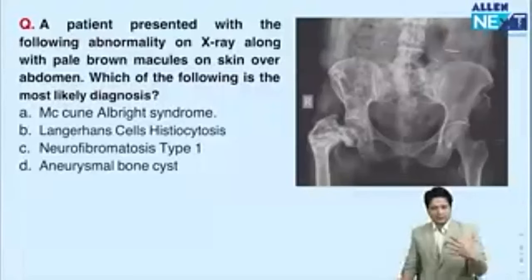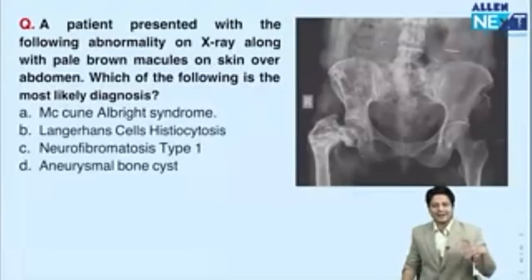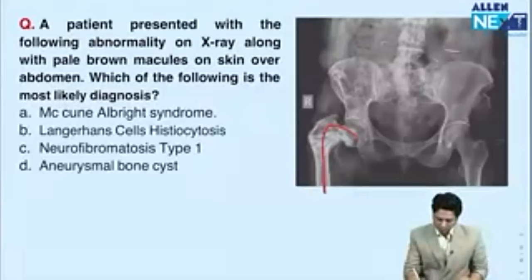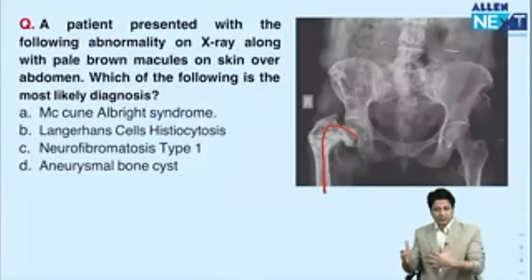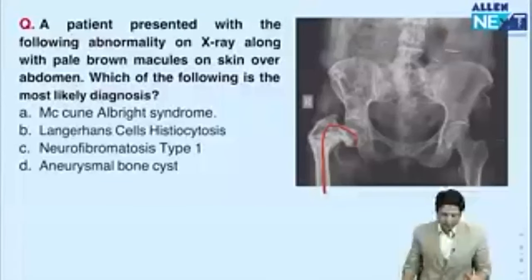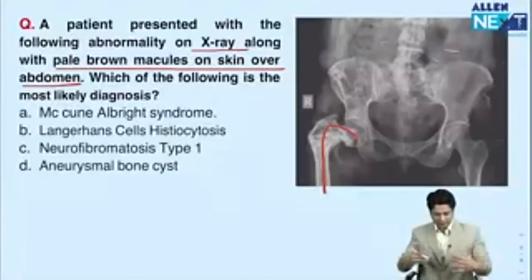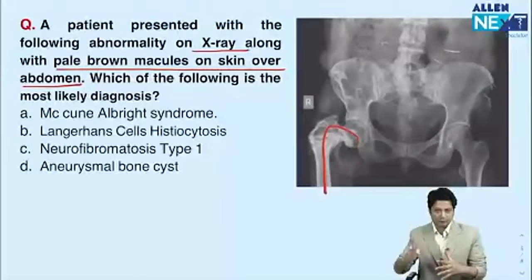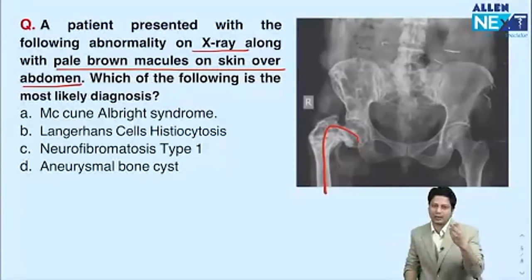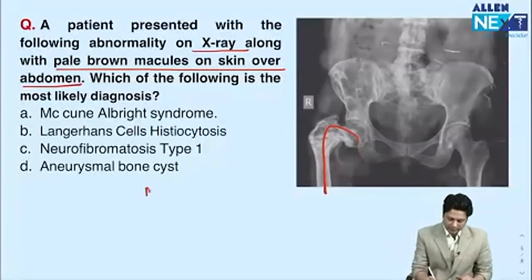Next question, a direct repeat from NEET PG 2023: an X-ray showing shepherd's crook deformity plus pale brown macular rashes over the abdomen. These are café-au-lait spots. The diagnosis is McCune-Albright syndrome, which consists of three features: polyostotic fibrous dysplasia, precocious puberty, and café-au-lait spots with irregular borders.